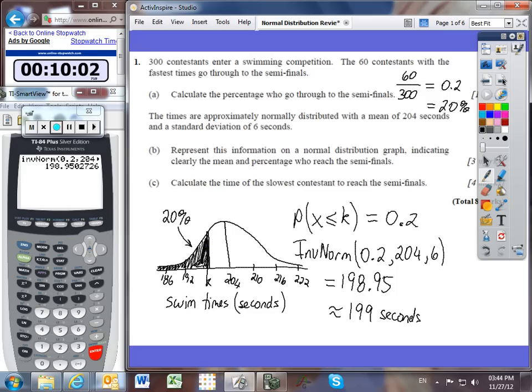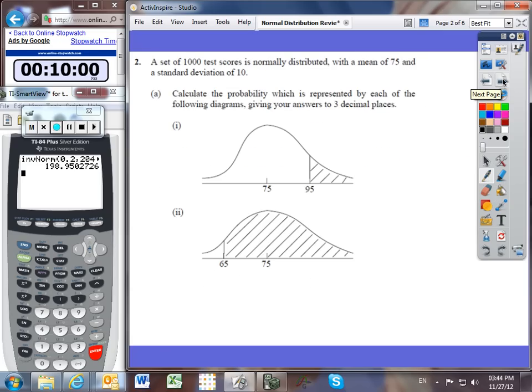Let's go on to question number 2. A set of 1,000 test scores is normally distributed with a mean of 75 and a standard deviation of 10. Part A, calculate the probability which is represented by each of the following diagrams, giving your answers to three decimal places.